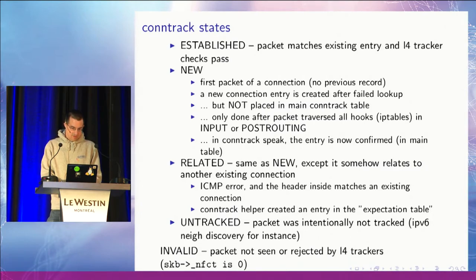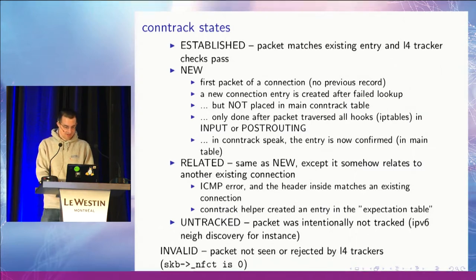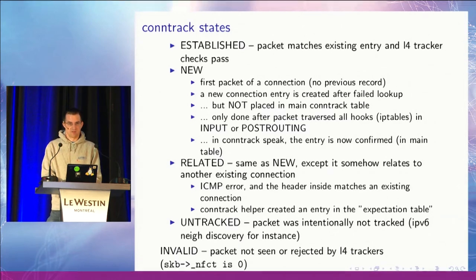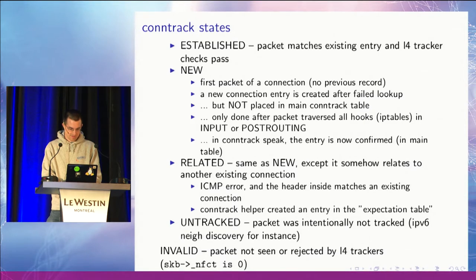'Invalid' is not a state at all, because it basically means that there is no conntrack entry and therefore no state. That will happen whenever the connection tracking engine thinks that something is wrong with the packet — so TCP out-of-sequence will not be dropped by conntrack; it's marked as invalid so users can drop it in their rule sets.